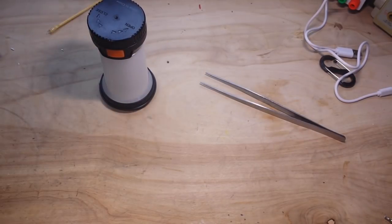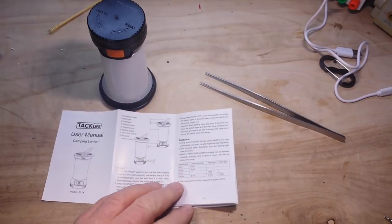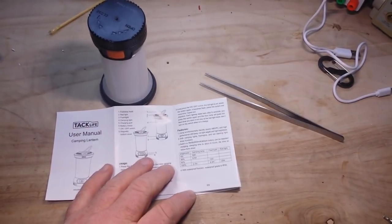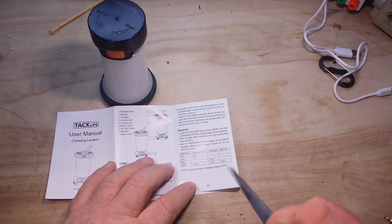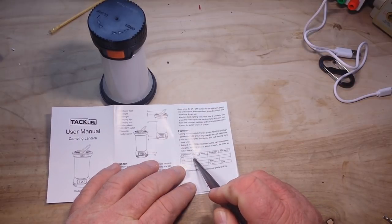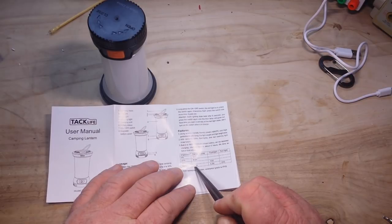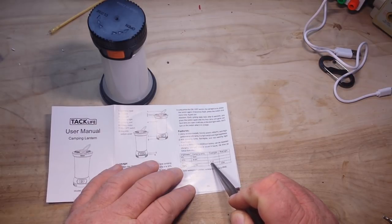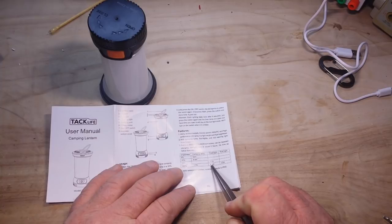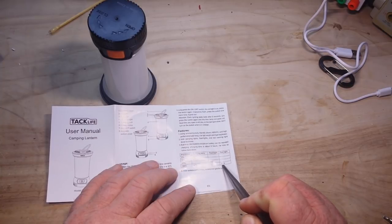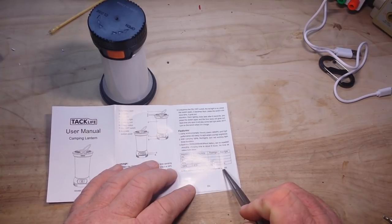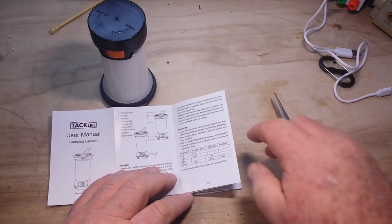And according to the instructions here, at 5% brightness you can get 52 hours out of it. 100% you get 2.7 hours. Flashlight at 50%, 13 hours. 100%, 4.3. And red lights, 37 hours. And it is IPX5 waterproof.